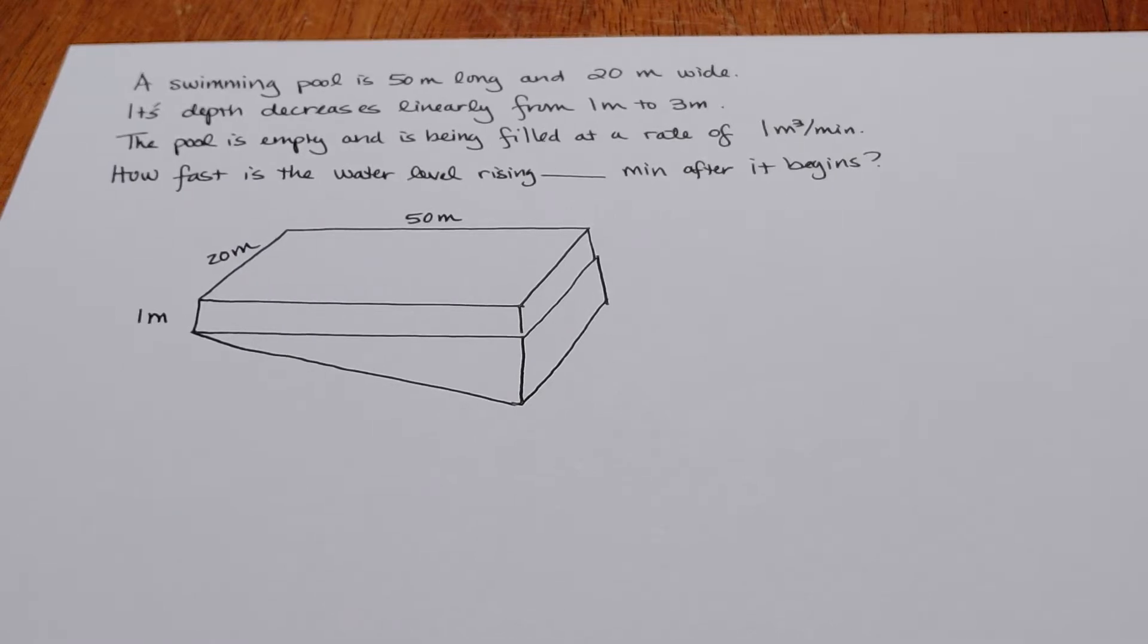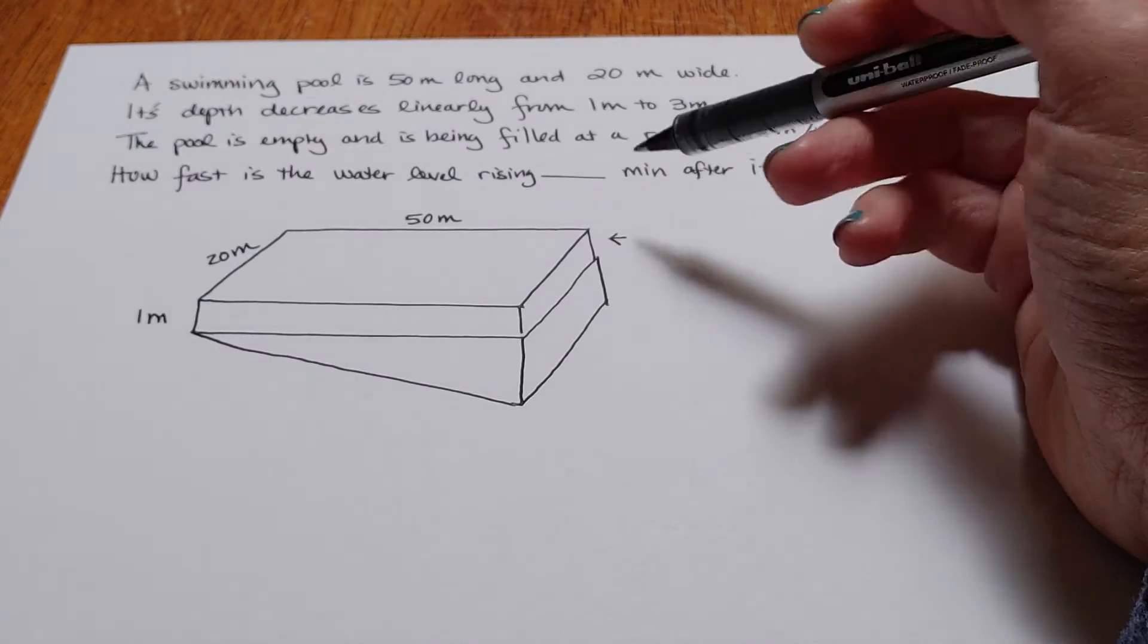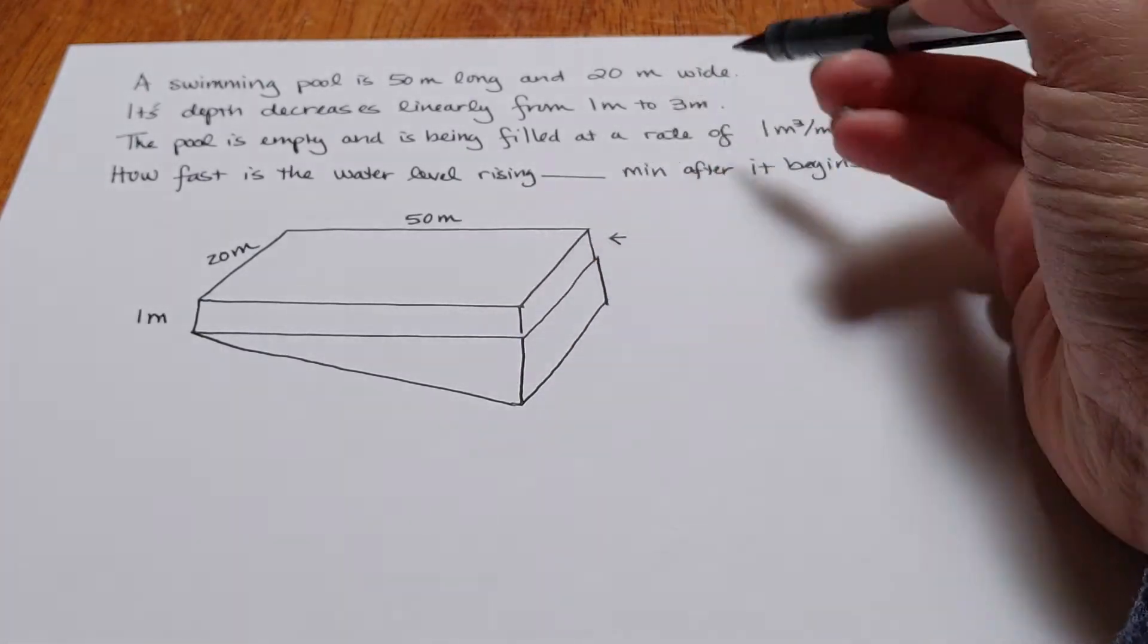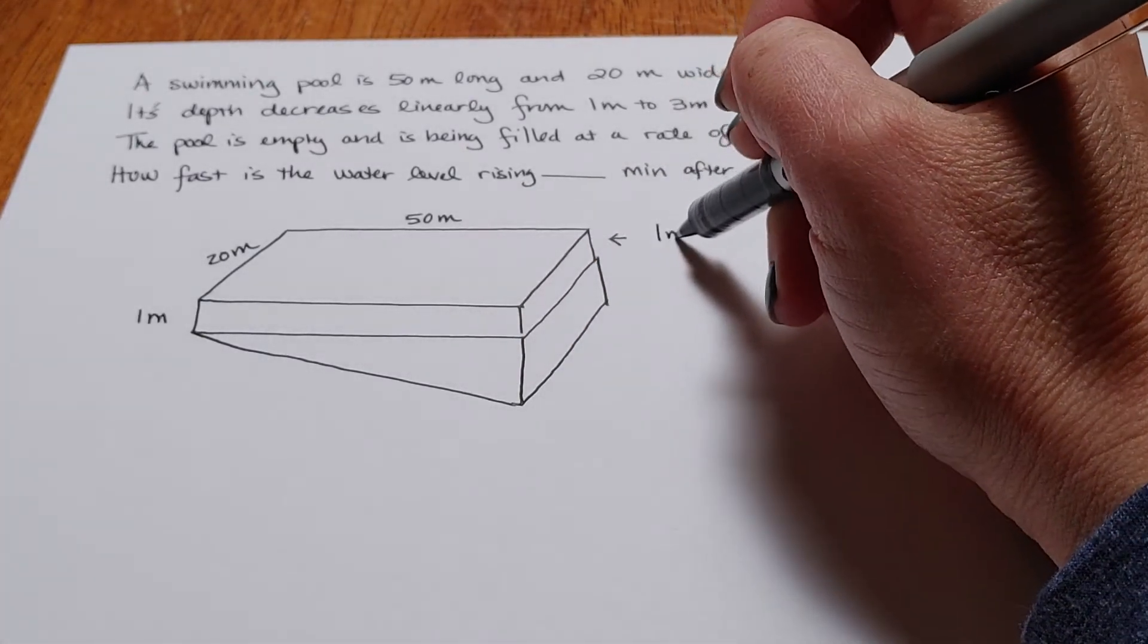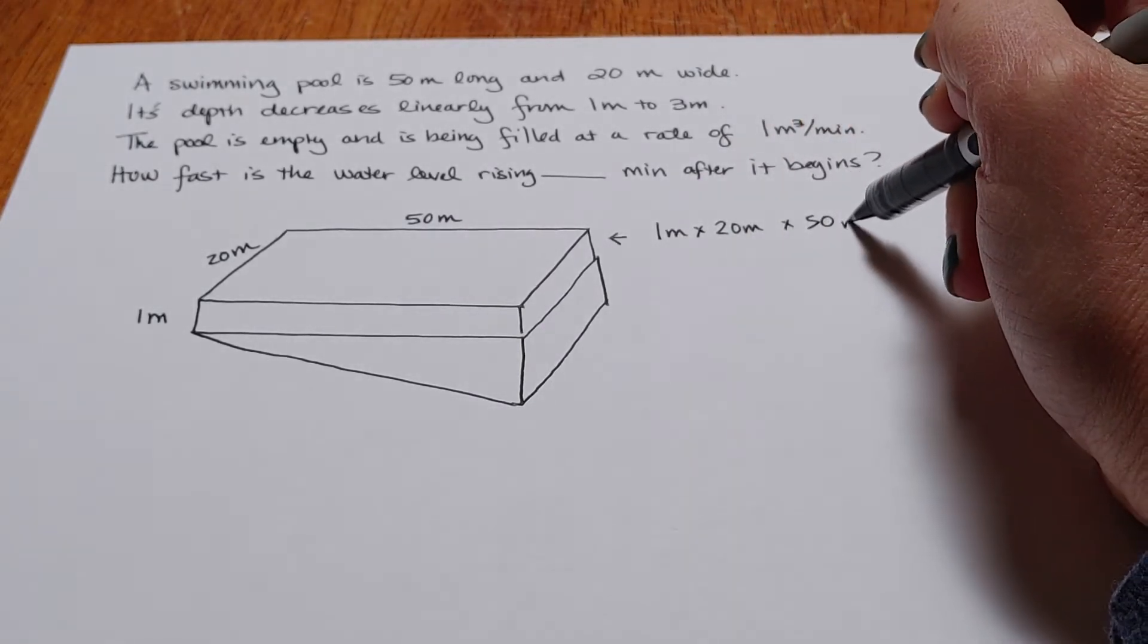The important thing to understand here is you really have two different three-dimensional shapes stacked on top of each other. The top is just a standard box and it is 1 meter by 20 meters by 50 meters, assuming that you could fill it all the way to the top.